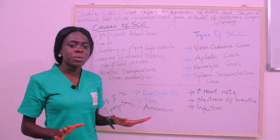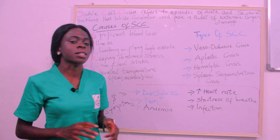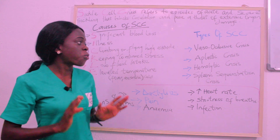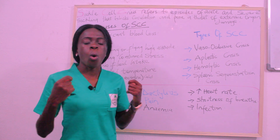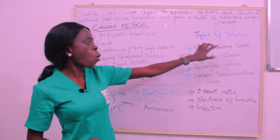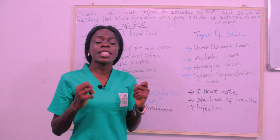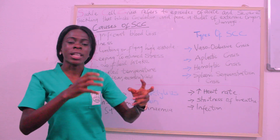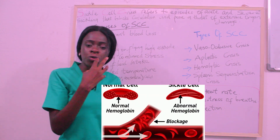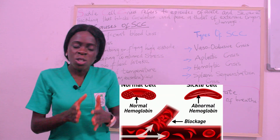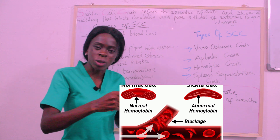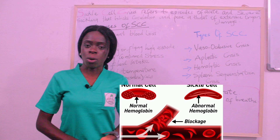There are actually four types of sickle cell crisis. The first is vaso-occlusive crisis. As the name implies, the blood vessels have been occluded — something is obstructing the blood flow. Vaso-occlusive crisis occurs when there is an obstruction in the flow of blood.